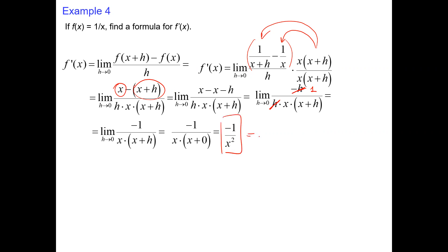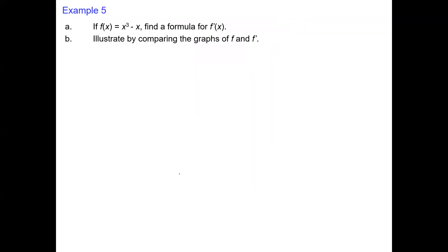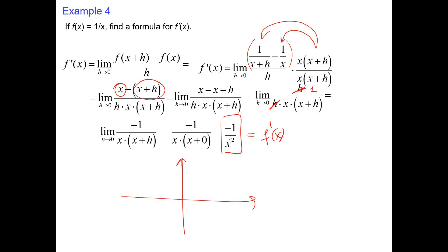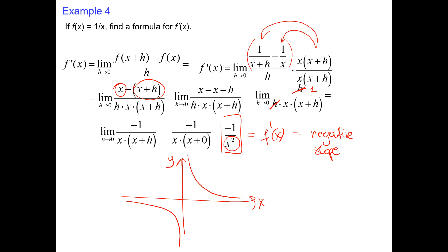Negative 1 over x² is the formula for the derivative of 1/x. We may notice x² is always positive, so negative 1 gives us an always negative derivative — always negative slope. This means the function is always decreasing. That's 1/x, a hyperbola in the first and third quadrant, and wherever we draw a tangent, the slope is negative, as confirmed by our formula.